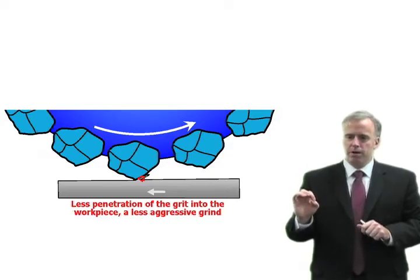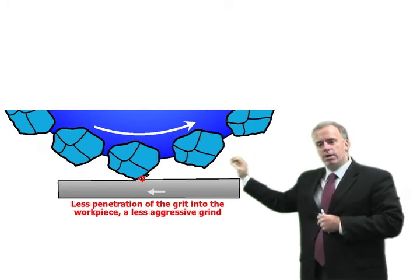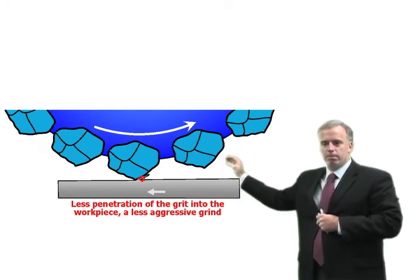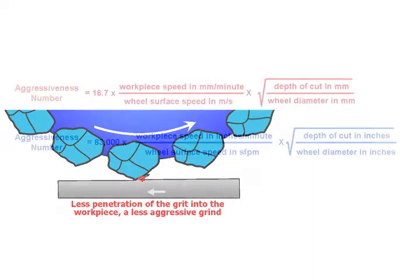Finding the sweet spot of the wheel is about getting a penetration depth that's not too shallow and not too deep, but somewhere in between. And the parameter that I find most useful is the aggressiveness number.